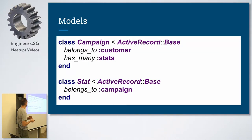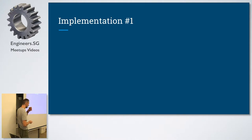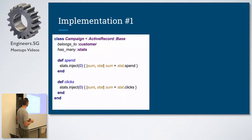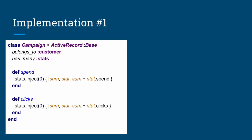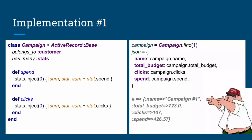Our starting point is two completely empty ActiveRecord models: a campaign that belongs to a customer and has many stats, and stats that belongs to campaigns. For the first implementation, we go as simple as possible — we throw some methods on our model itself. Every time we talk to campaign, we can also ask it about its spent, and we just go through all the stats and sum up the spent. This is how we can use it: select the campaign and create a JSON representation by calling those methods.